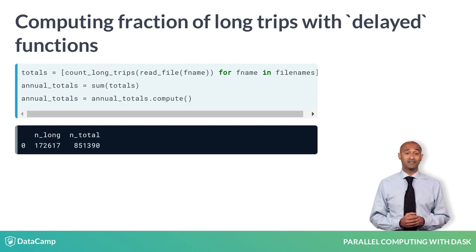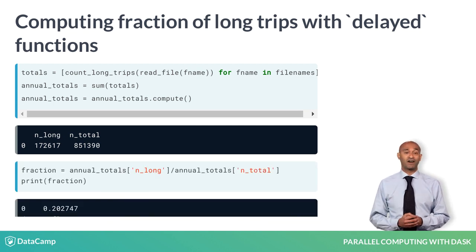The result takes about 10 seconds and yields a pandas data frame with a single row and two columns. Notice this is all done with a straightforward use of Dask delayed functions instead of using generators explicitly. The final result yields the fraction of trips over 20 minutes as before.